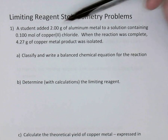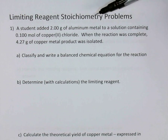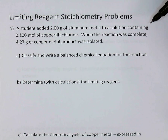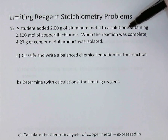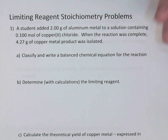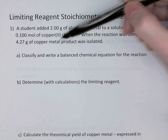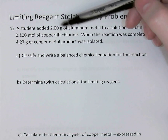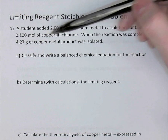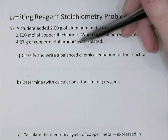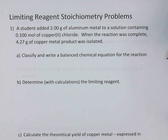For example, pause the video and read this question. The student has added two grams of aluminum — that's one reactant — to a solution with 0.1 moles of copper chloride. From just that sentence, I can tell this is going to be a limiting reagent problem, because we've got two reactants given and we're told exactly how much of each: two grams of aluminum and 0.1 moles of copper chloride. That's the visual clue that we're dealing with a limiting reagent problem.